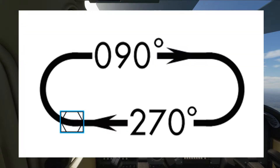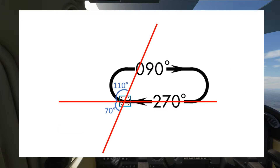The hold entry is dependent on the heading of the aircraft as it arrives over the fix, relative to the orientation of the hold. This diagram shows a hold with a 270 inbound with right turns. This overlay template can be turned around to work out your hold entry for any hold, as long as it's oriented correctly.